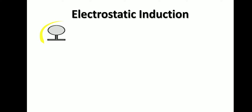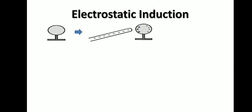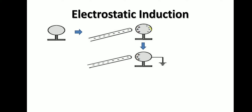Now let's discuss electrostatic induction. We have a conductor sphere and we need to make it charged without any physical contact with any other body. We bring a negatively charged rod nearby the conductor sphere without touching it. What happens: the positive charge inside the conductor shifts towards the negatively charged rod, while the negative charge shifts to the other side. If we then connect this negative-charge side to the earth, all the negative charge flows down into the earth, which has the capability to absorb electrons.